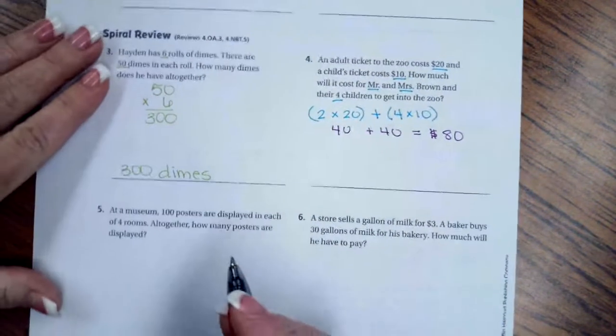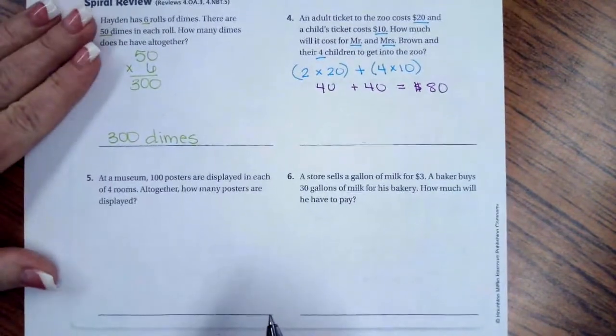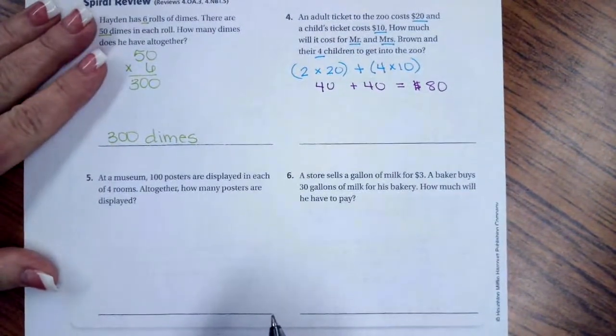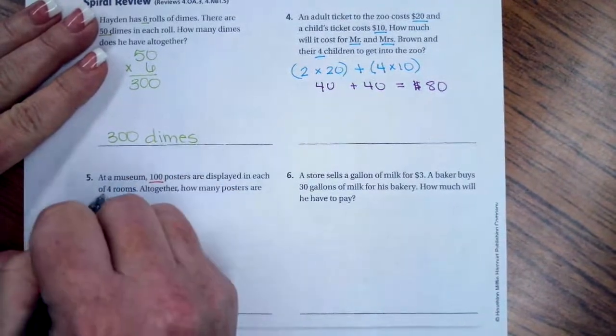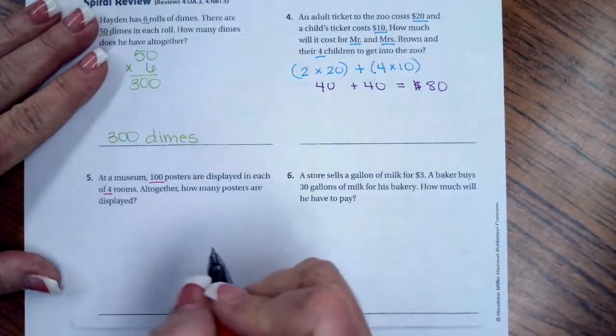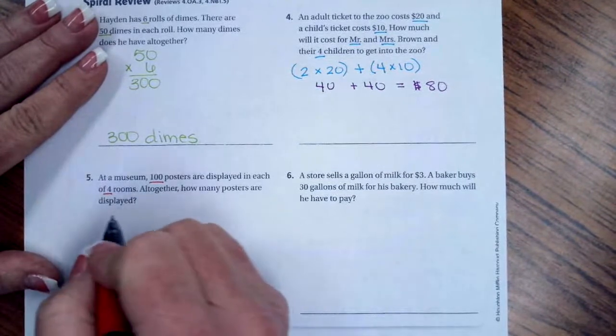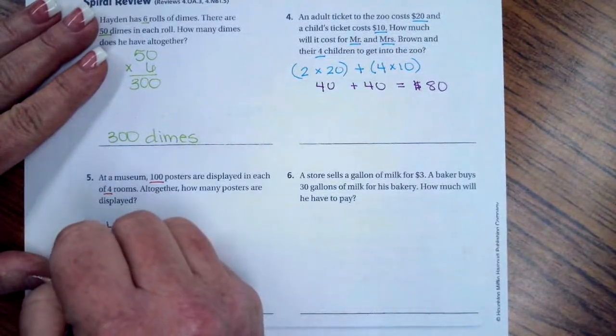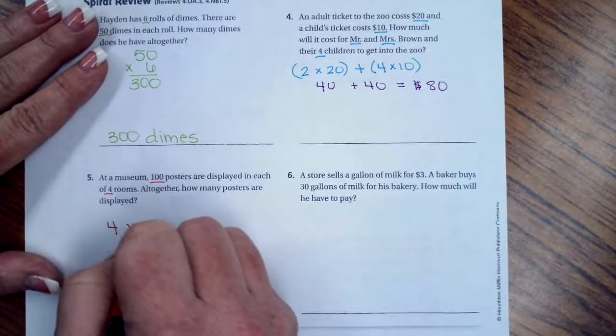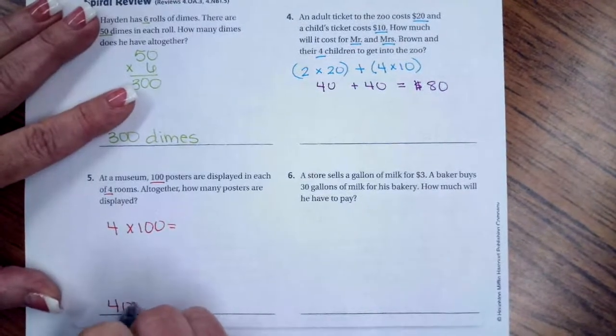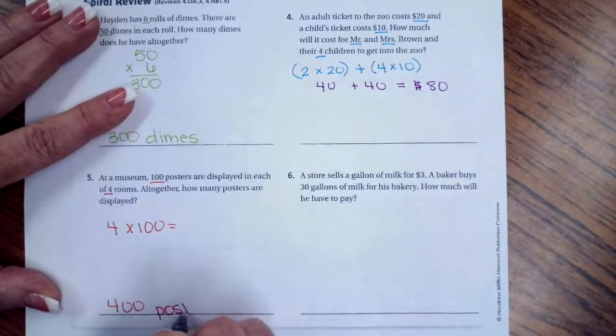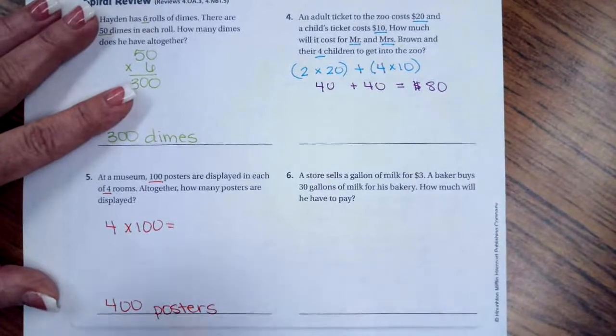At a museum, 100 posters are displayed in each of 4 rooms. Altogether, how many posters are displayed? Well, 4 times 100 equals 400 posters. There you go.